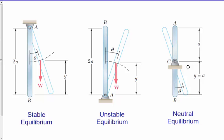Neutral equilibrium is where you have a bar pinned in the middle. Now I can locate this at all these different positions and angles, and it would stay in those positions if everything was perfectly balanced. This is called neutral equilibrium.